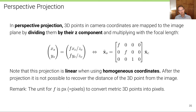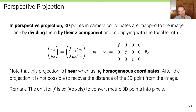The important point is that perspective projection is linear when using homogeneous coordinates. After projection, as with orthography, it is impossible to recover the 3D depth from the image. The focal length F is typically expressed in pixels so that metric 3D points (in meters) are converted directly to pixel screen coordinates — meters cancel, leaving only pixel units.